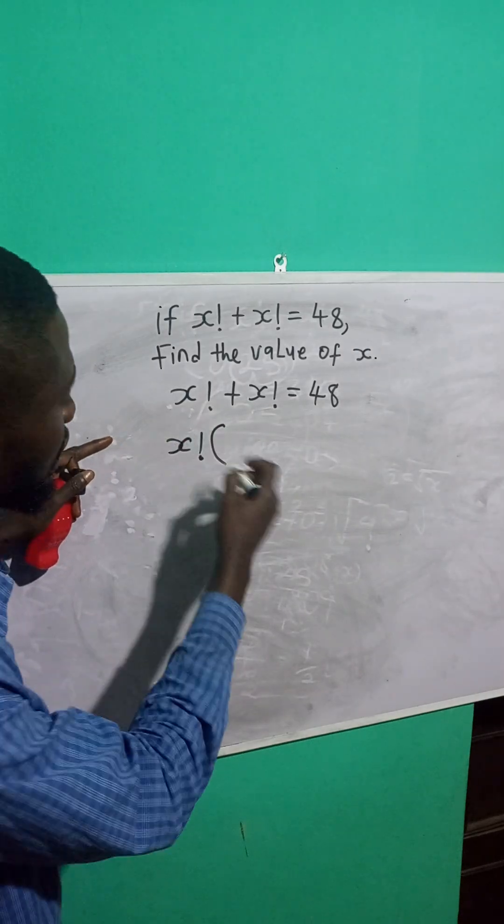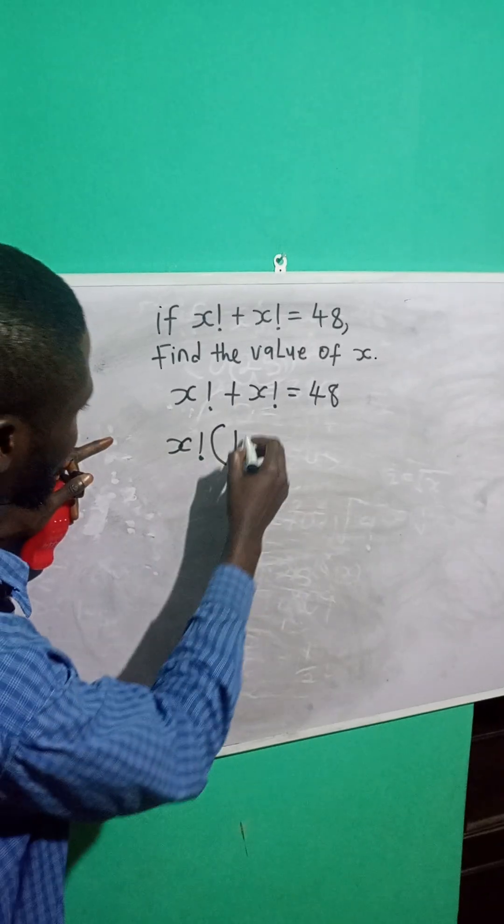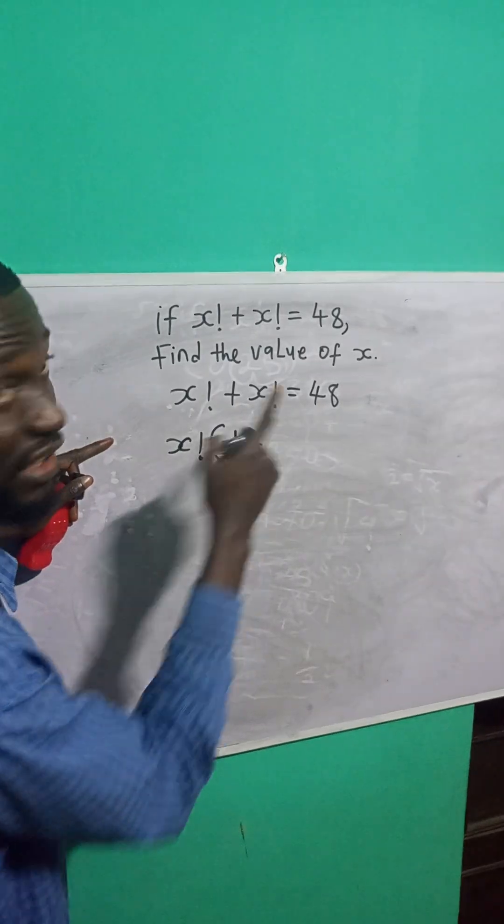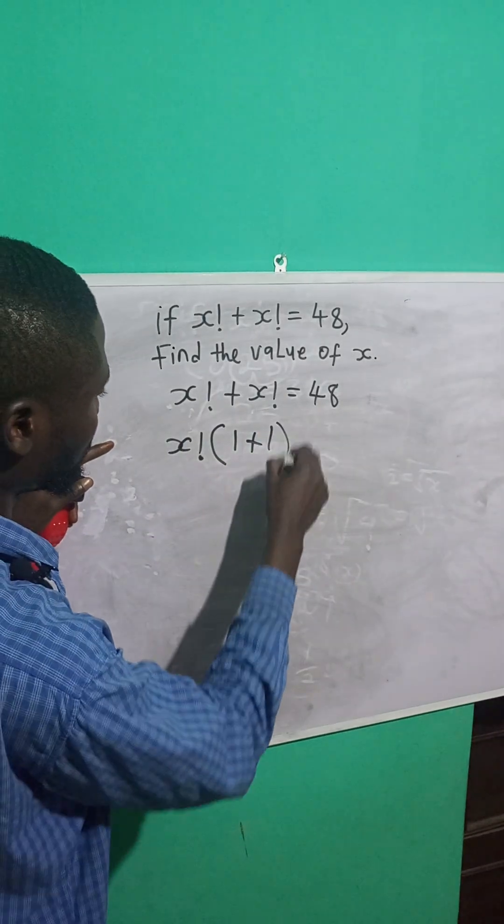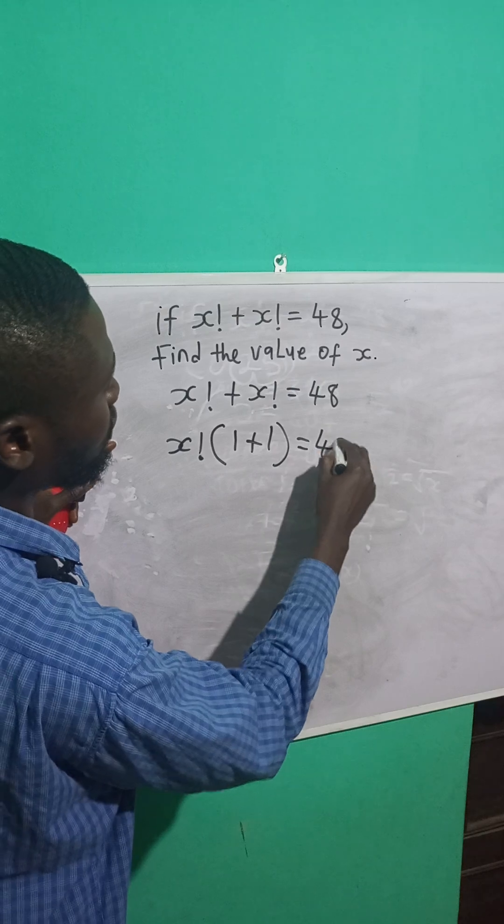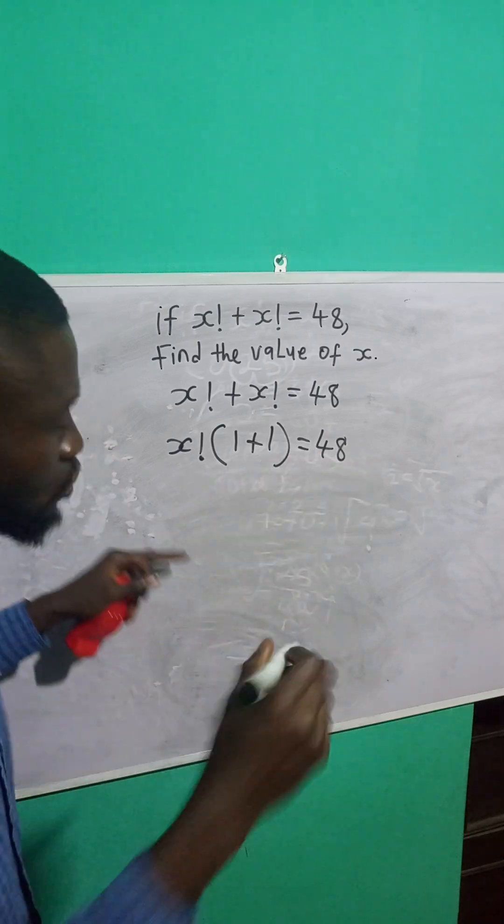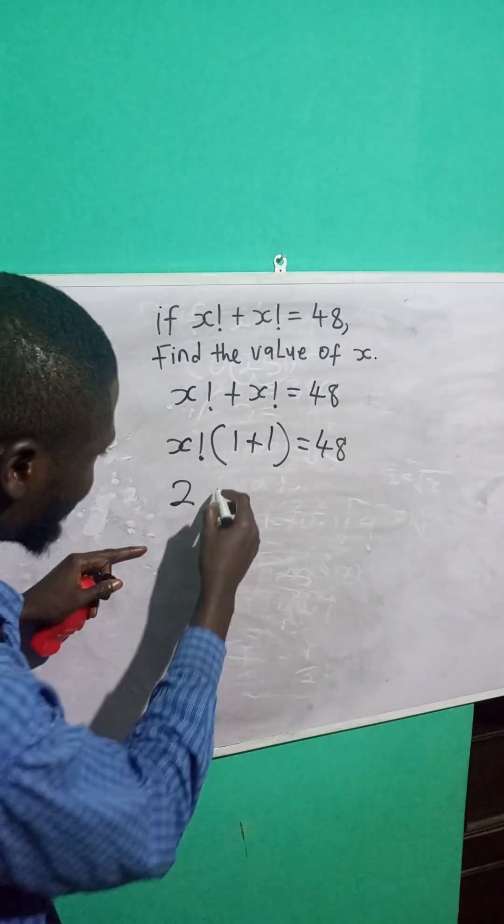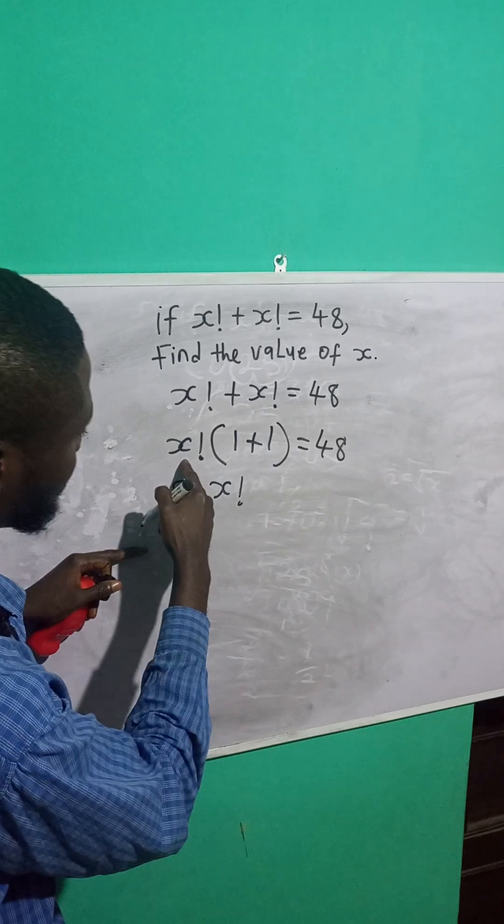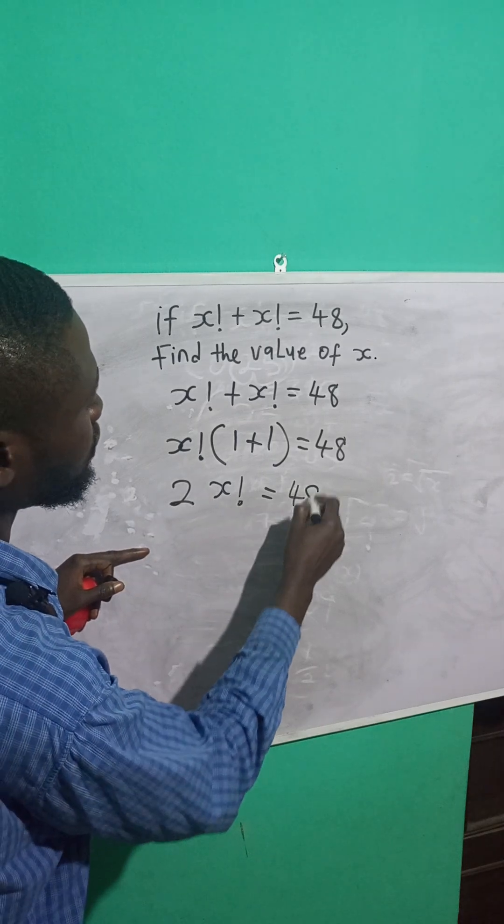x factorial divided by x factorial is 1. This is equal to 48. 1 plus 1 is 2. So this becomes 2 times x factorial. This x factorial is equal to 48.